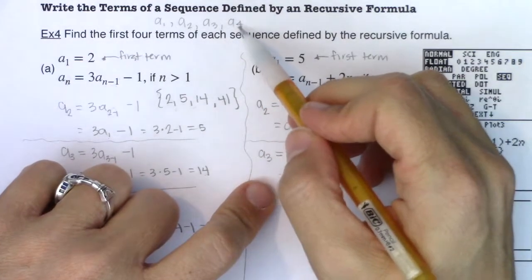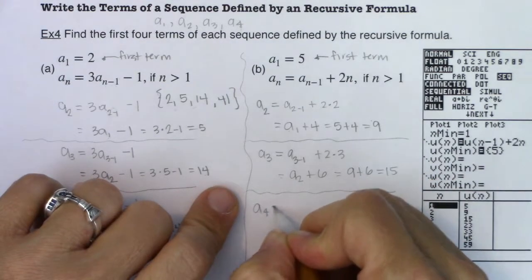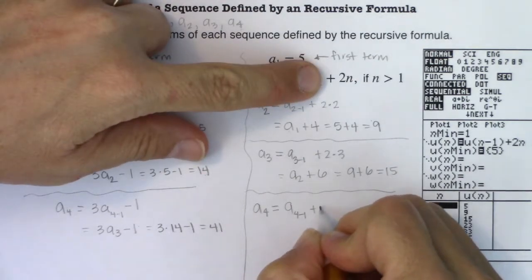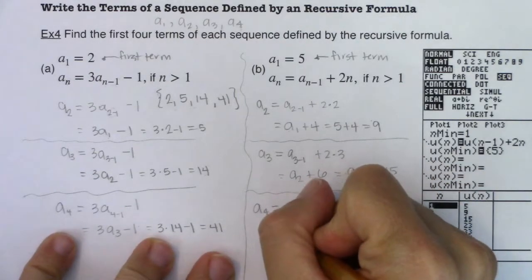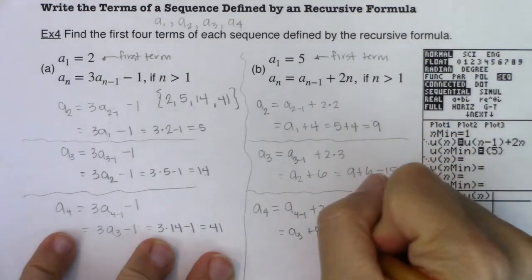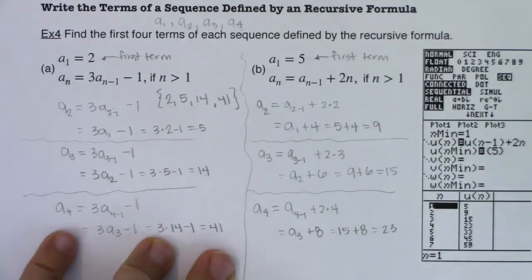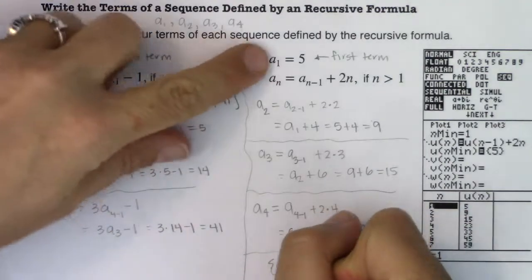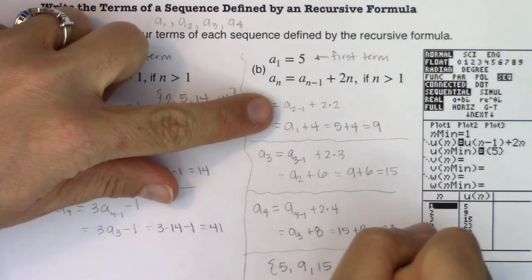I still need a₄. Substituting n=4: a₄ = a(4-1) + 2(4) = a₃ + 8. Since a₃ = 15, that's 15 + 8 = 23. So the four terms of this sequence are 5, 9, 15, 23.